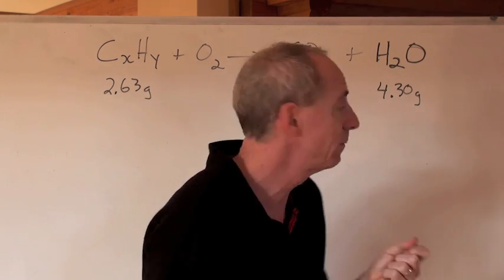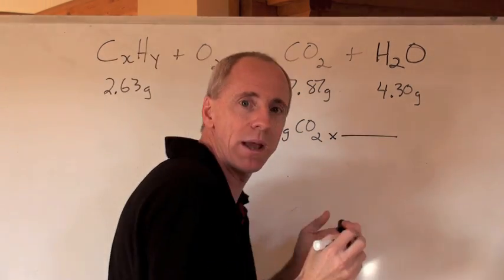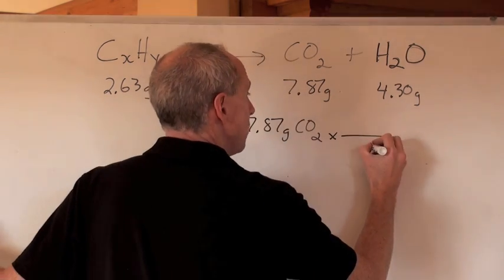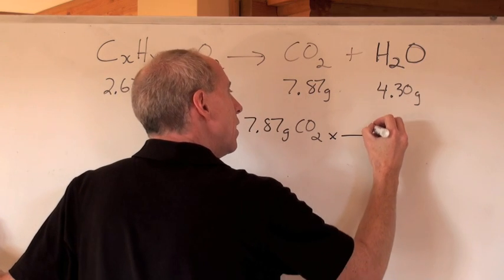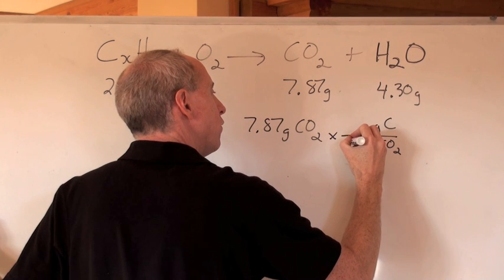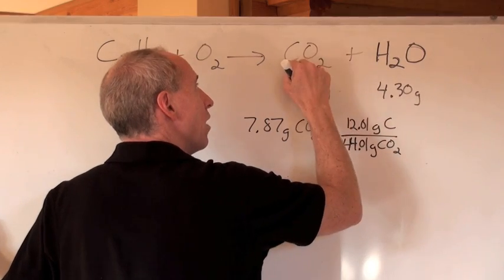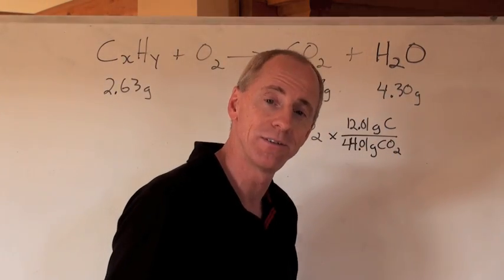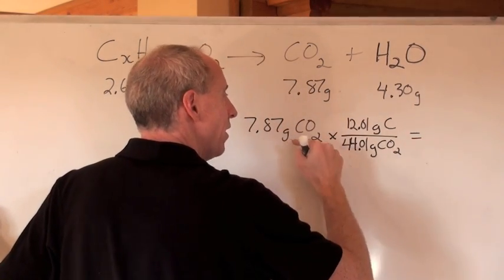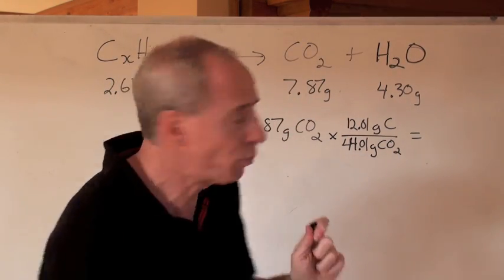7.87 grams of CO2 times, now what is it? How are you going to find the grams of carbon? Think about what you want and what you don't want. You don't want the grams of CO2. What do you want? You'd really like to know the grams of carbon. And is it not true that in this molar mass, which is 44.01 grams, that there's 12.01 grams of carbon in that total molar mass. So now, what does that equal? Well, when you do this math here, that's going to equal 2.15 grams of carbon.